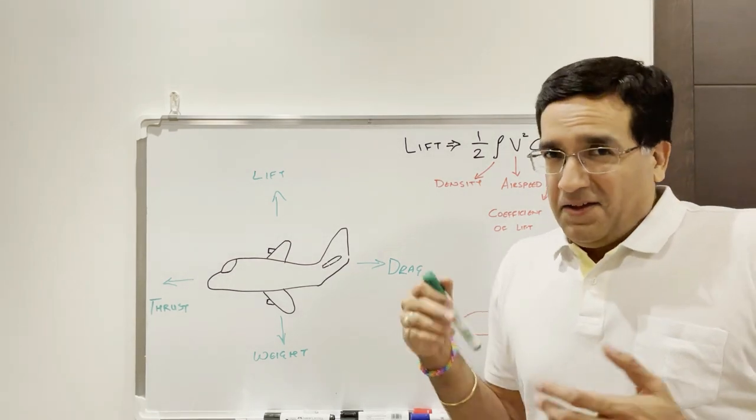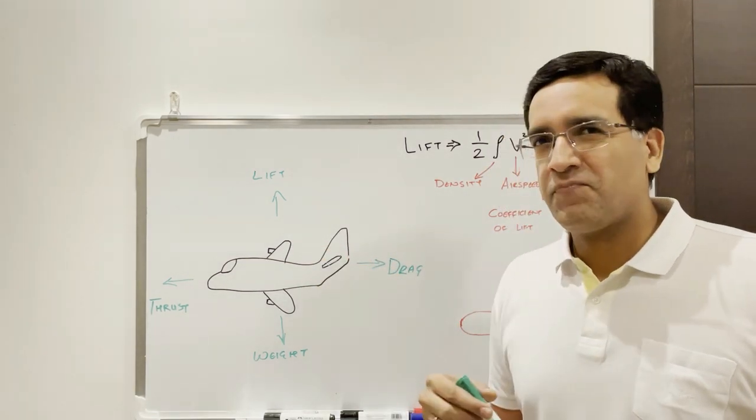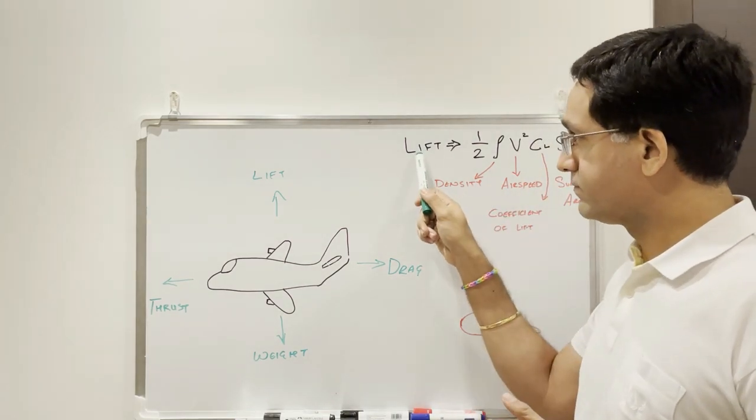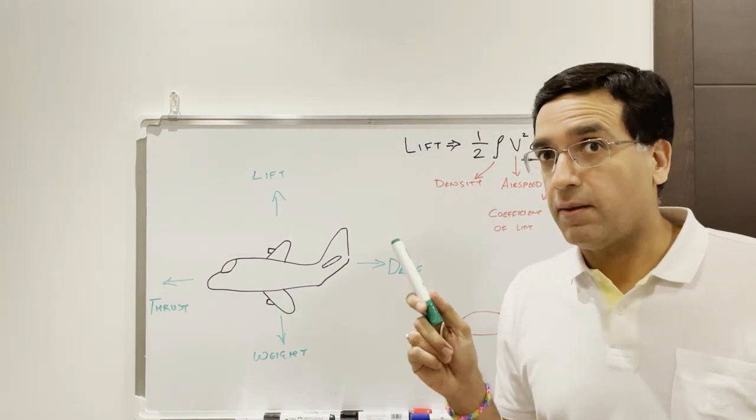And S is the surface area of the wings. These are essentially the four components that have a direct impact on lift.